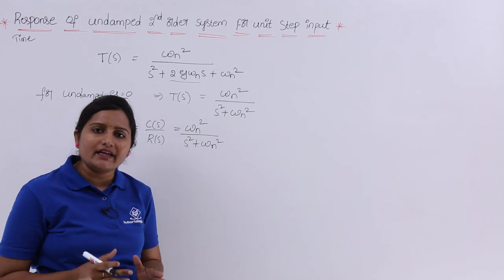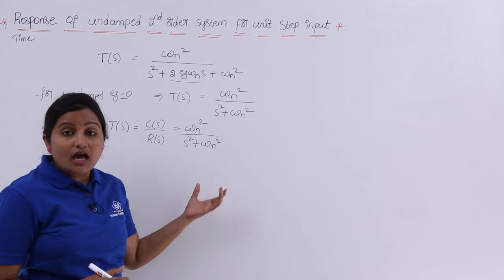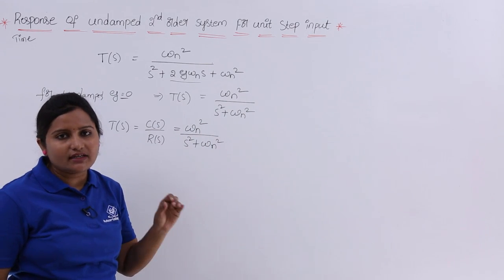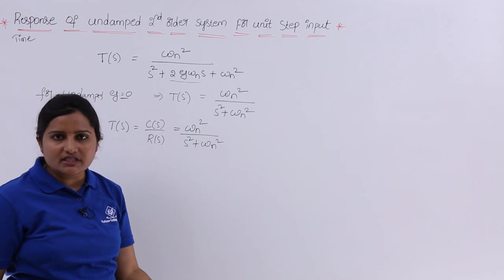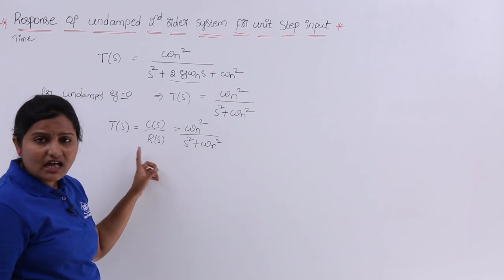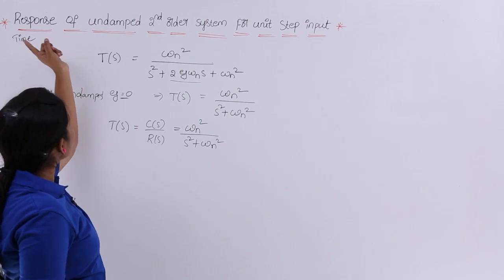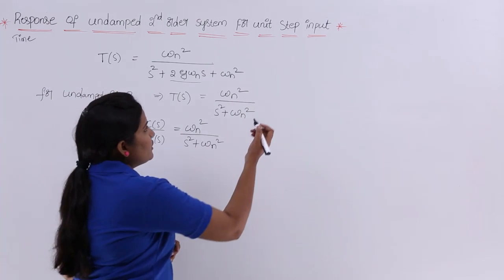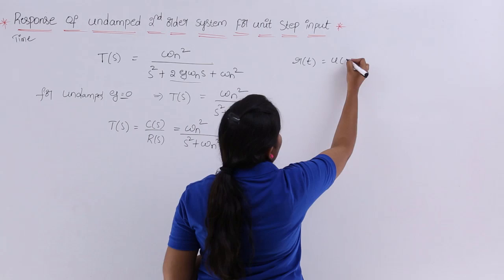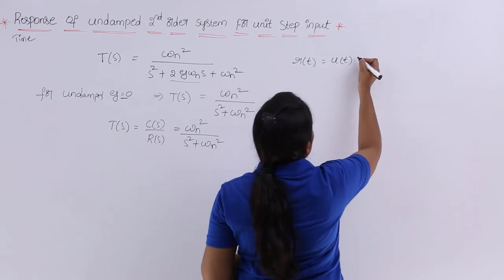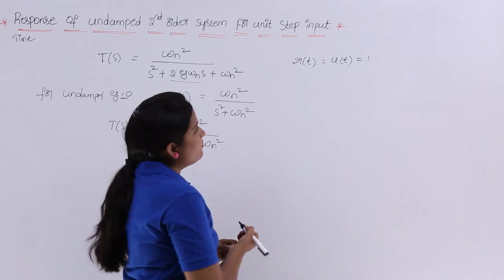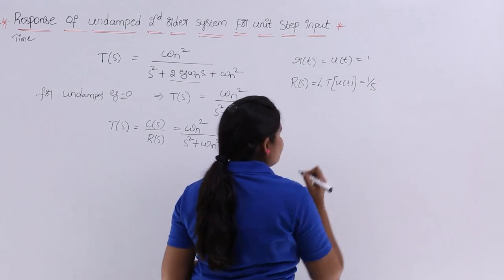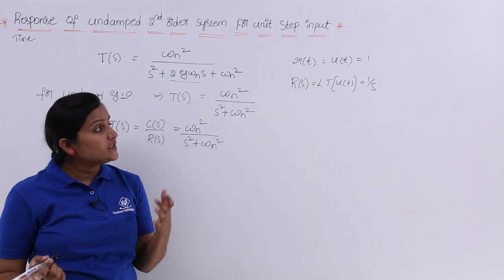We consider this transfer function for the undamped second order system. If we know R(s), we can find C(s), and from C(s) we can find c(t) by taking the inverse Laplace transform. Our input here is a unit step signal, so r(t) = u(t). The Laplace transform of the unit step function is R(s) = 1/s.